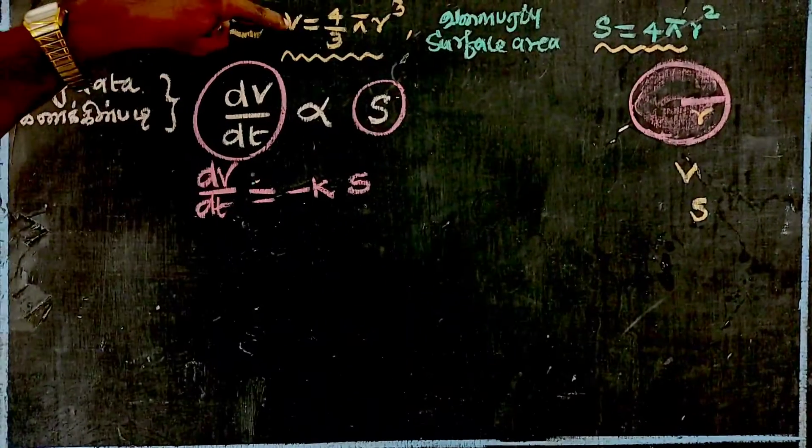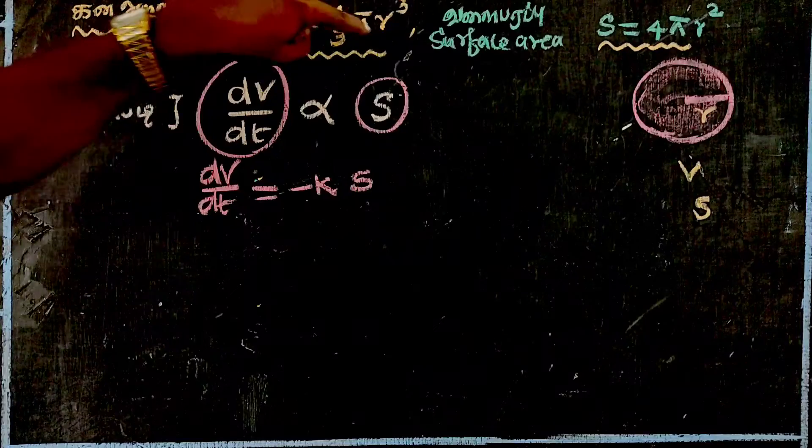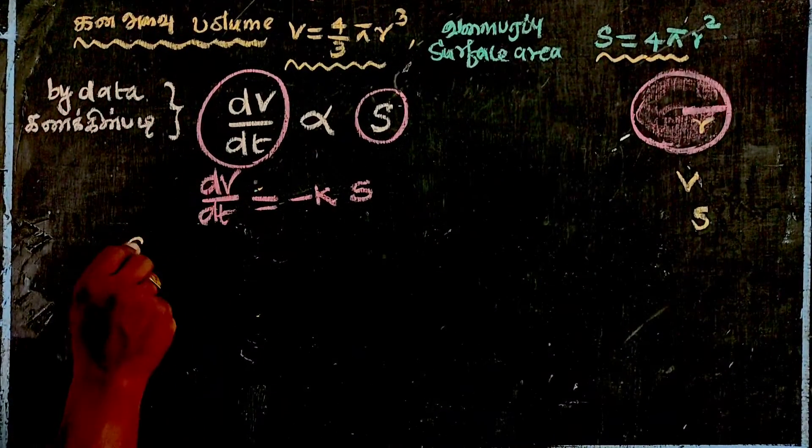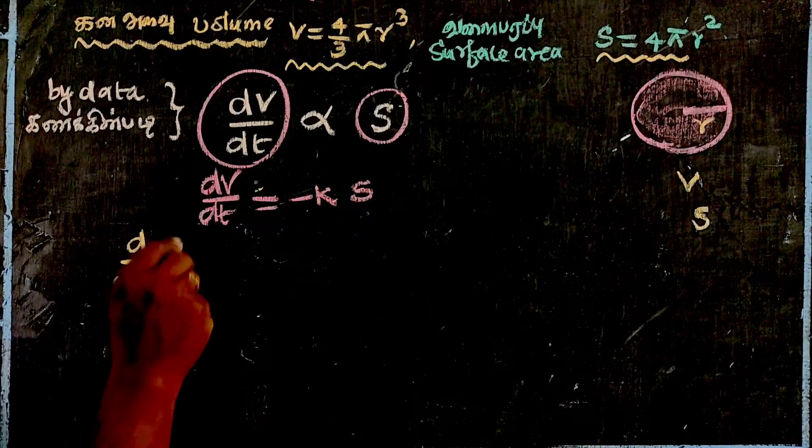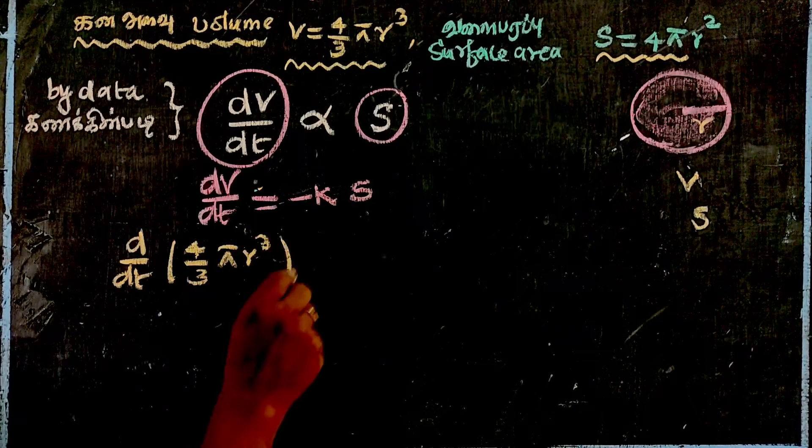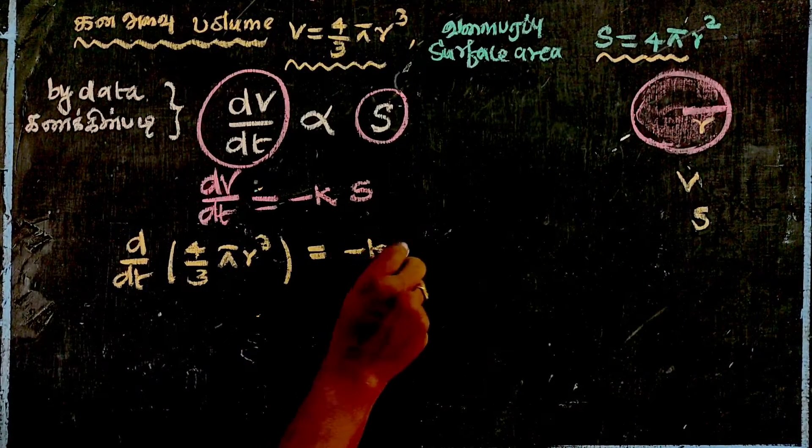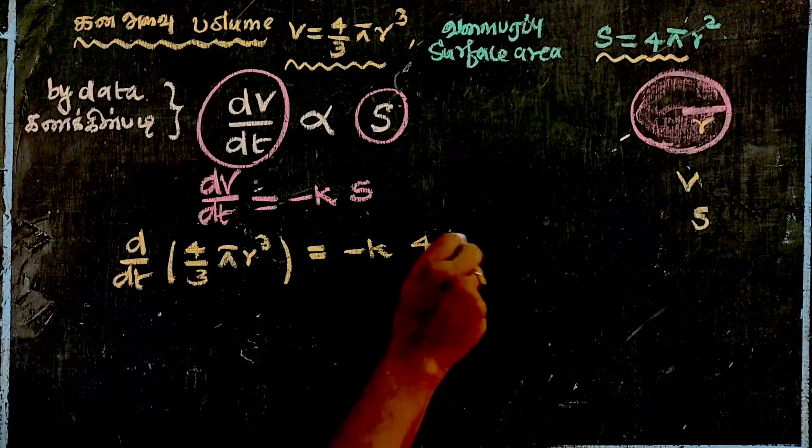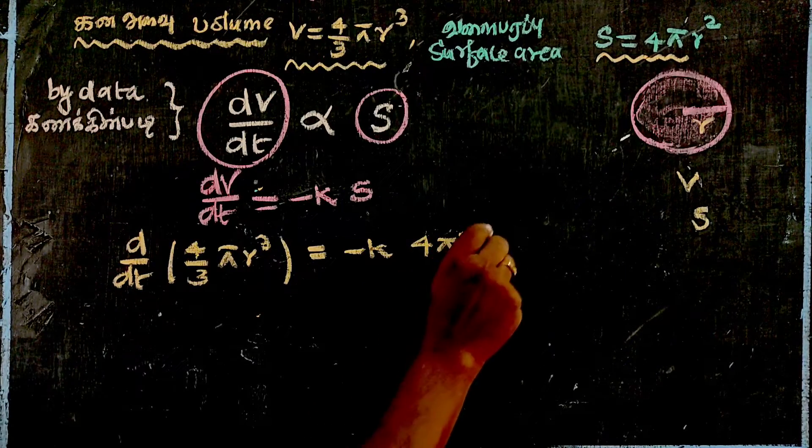Now volume is 4 by 3 pi r cubed, so d/dt of 4 by 3 pi r cubed is equal to minus kS, which is equal to minus k times 4 pi r squared.